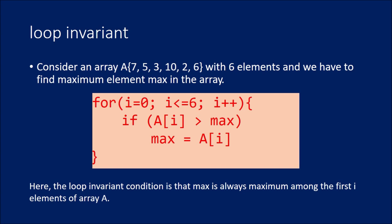Now, if you look at this code, then for i equal to 0 to 6, i++, what we are doing, if A[i] greater than max, then max equal to A[i]. What it is going to do? It is always going to store a maximum value in variable max.